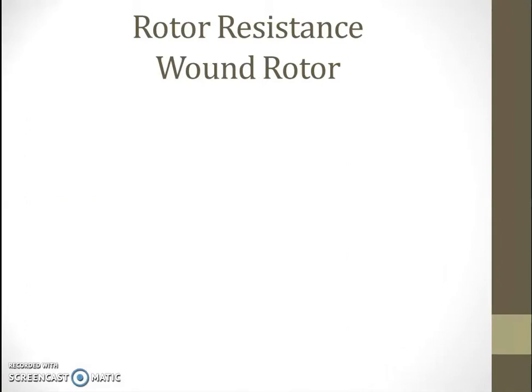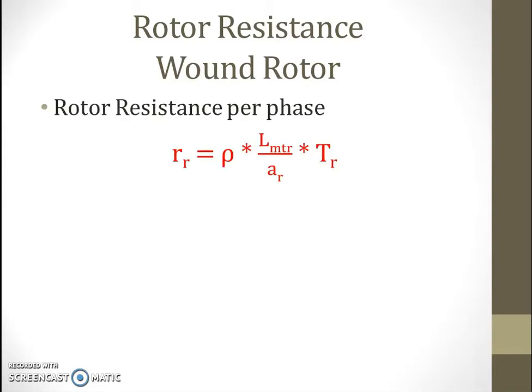Now, rotor resistance of wound rotor. As I said stator resistance remains common, so now we look at rotor resistance. First we see how to calculate rotor resistance for wound rotor. Rotor resistance per phase is given by a similar equation — suffix R is for rotor — so it is rho multiplied by length divided by cross sectional area and multiplied by total number of rotor turns per phase.